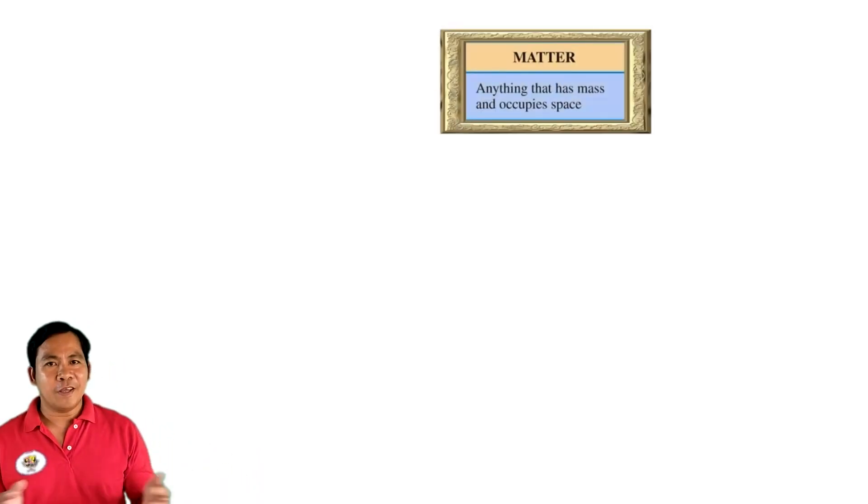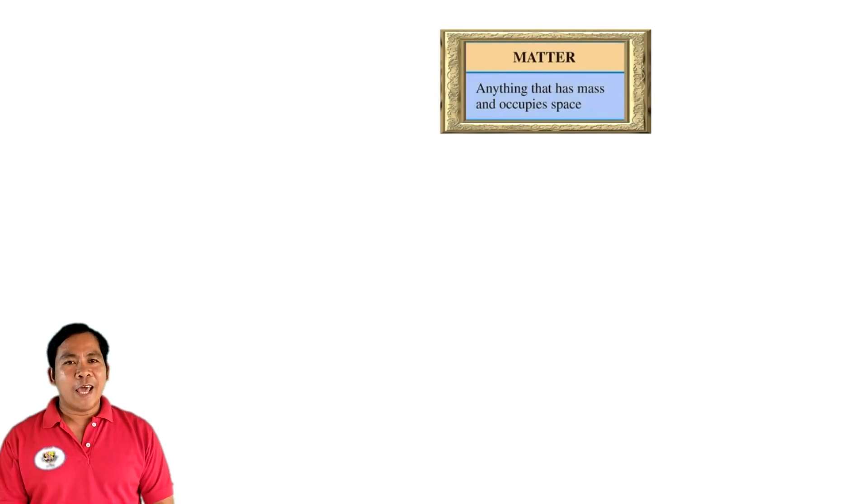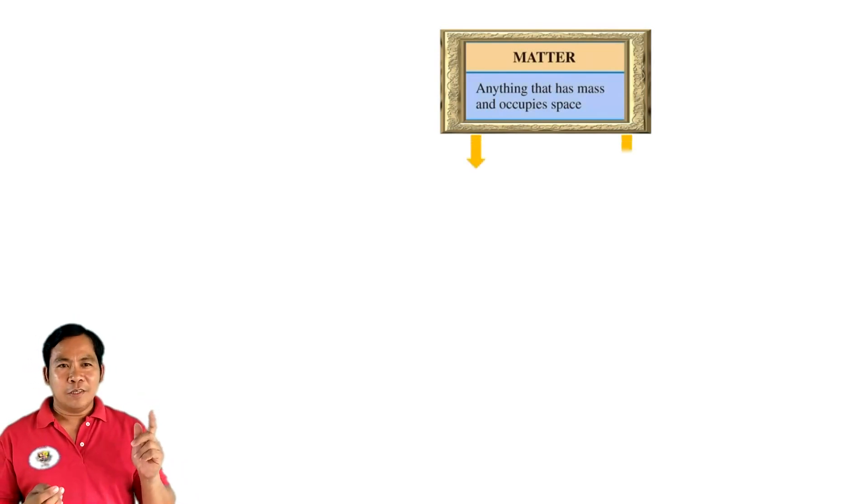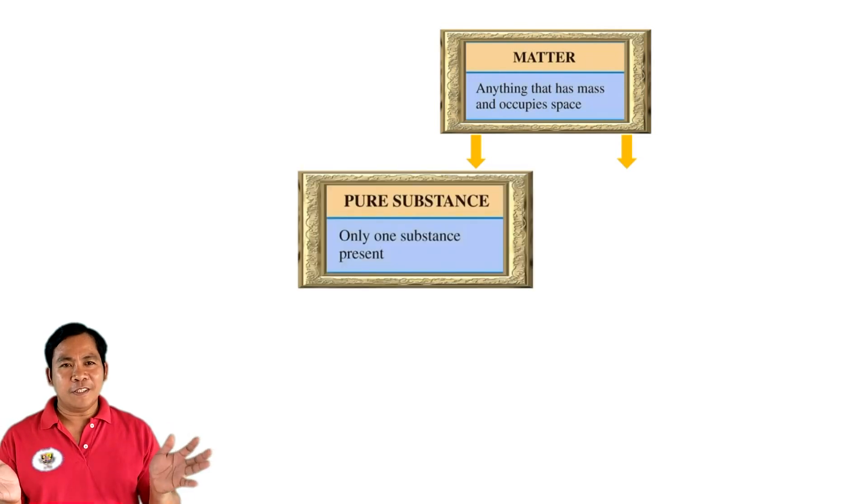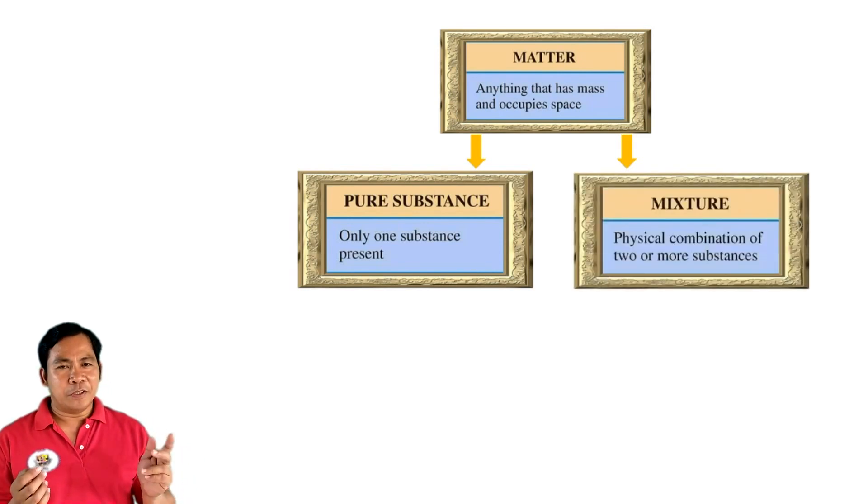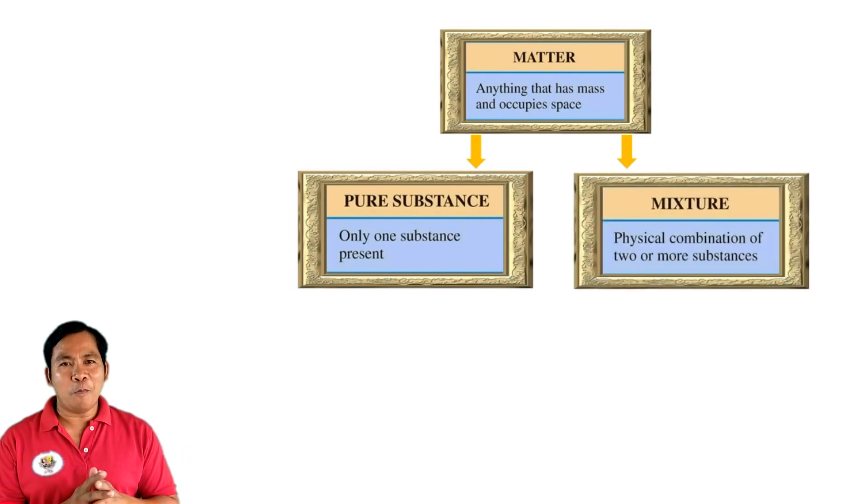Matter is anything that occupies space and has mass. There are two types of matter: the pure substance that is made of only one type of material, and the mixture that is a physical combination of two or more substances.